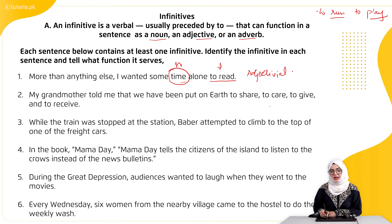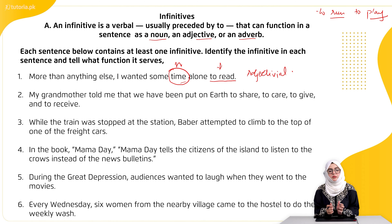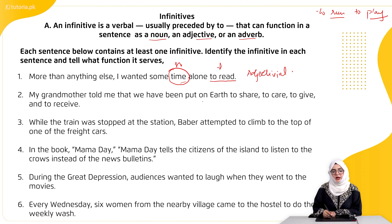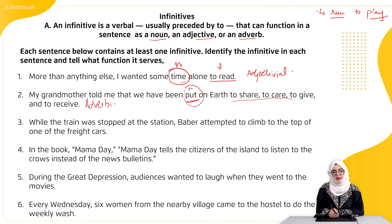Second: 'My grandmother told me that we have been put on earth to share, to care, to give, and to receive.' Jab infinitives adverb ki tarah act karte hain, to adverb of manner, place, time, reason, ya purpose ho sakte hain. Yahan action hai 'put on earth' — kyun? To share, to care, to give, and to receive. Ek action hua aur us ke baare mein reason di ja rahi hai, so yeh adverbial hai — adverb of reason/purpose.